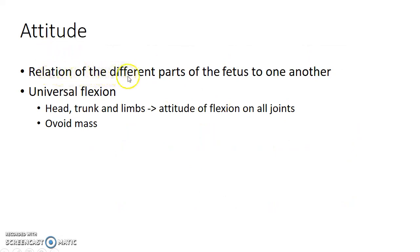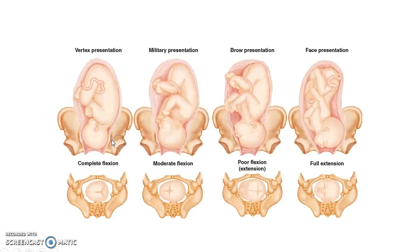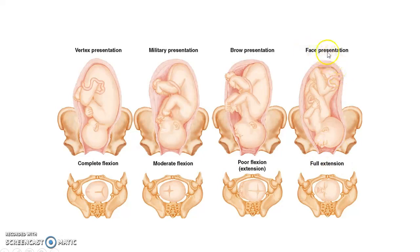Coming to attitude: it is the relation of the different parts of the fetus to one another. The most common attitude is universal flexion, where the head, trunk, and limbs show an attitude of flexion on all joints, so the fetus forms an ovoid mass in the uterus. In universal flexion the presenting part will be vertex. In moderate flexion the presenting part will also be vertex. In poor flexion it will be brow presentation, and in full extension the presenting part will be face.